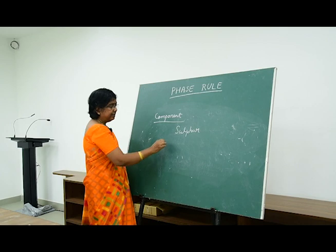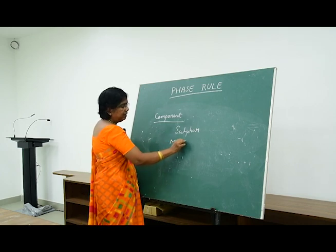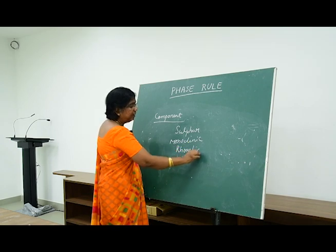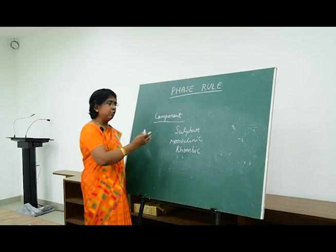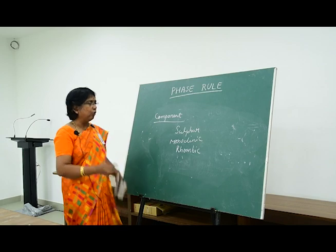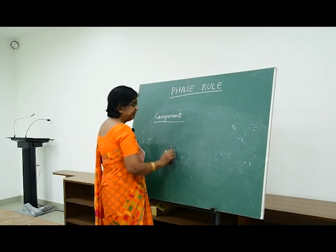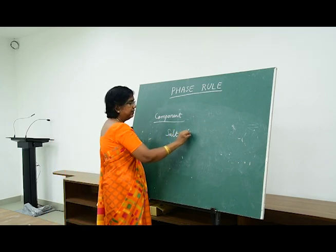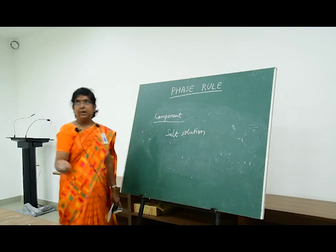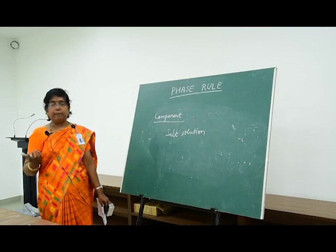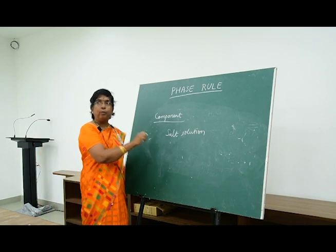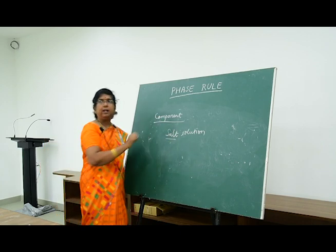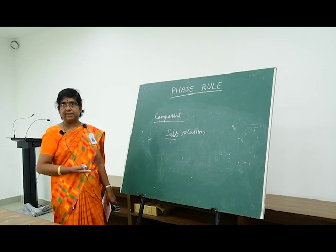Another example of a one-component system is sulfur. Sulfur can exist as monoclinic sulfur, rhombic sulfur, liquid sulfur, and sulfur vapor. On heating, it changes from monoclinic to rhombic, to liquid, and to vapor — it is again a one-component system. Consider salt solution: you dissolve common salt in water and get a single phase. But you need to specify how much salt is present in that solvent, so it is a two-component system.